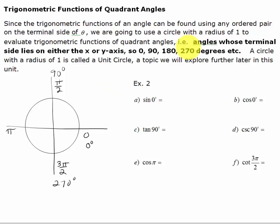Since the new definition of trigonometric functions of any angle was based on an ordered pair on the terminal side of the angle, we could use any ordered pair on a terminal side and get the same trig ratio. Trigonometric functions are functions, so for every input there's only one output. What we're going to do is use what we call a unit circle, a circle with a radius of 1. If the radius is 1, I'm going to put an ordered pair on the terminal side of each of these quadrant angles.